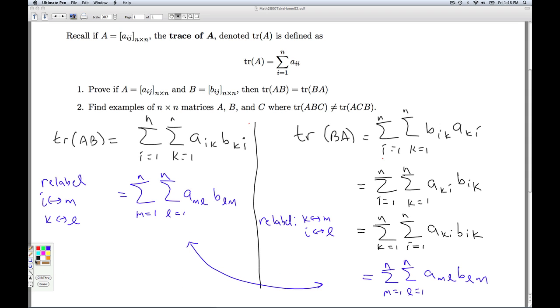So hence, what have we shown? The trace of AB is the same as the trace of BA by using the definition of matrix multiplication, the concept of a dummy variable, and switching the order of summation. That'll do it for number one.